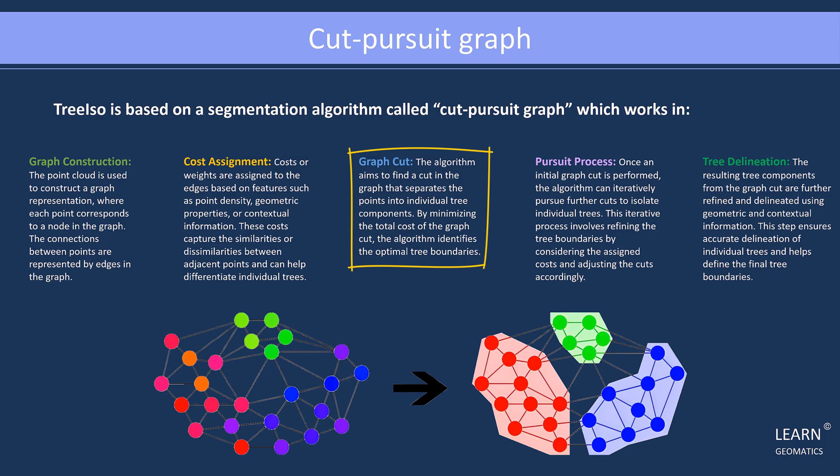Once an initial graph cut is performed, the algorithm iteratively pursues further cuts to refine and isolate individual trees. This iterative process considers the assigned costs and adjusts the cuts accordingly, enhancing the accuracy of tree boundaries.